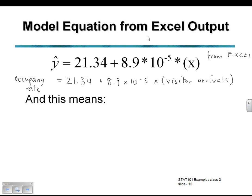Interpreting both the value of the slope and the intercept. Starting with the intercept, beta 0, 21.34 in this example. This means when there are no visitor arrivals, the occupancy rate is 21.34%. The intercept is the value where our line crosses the Y axis.